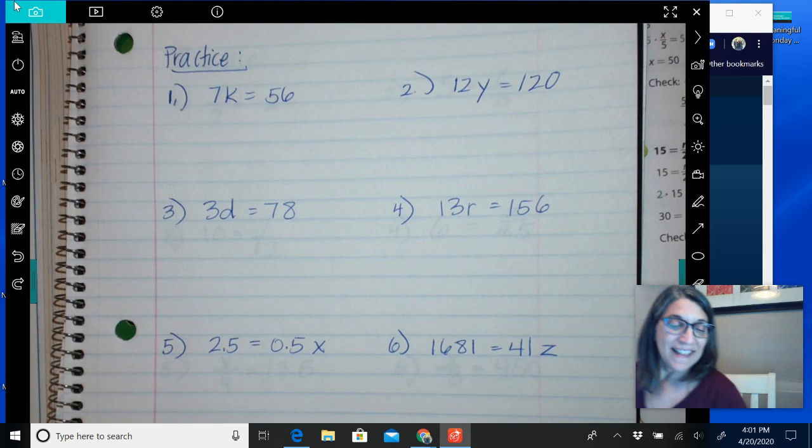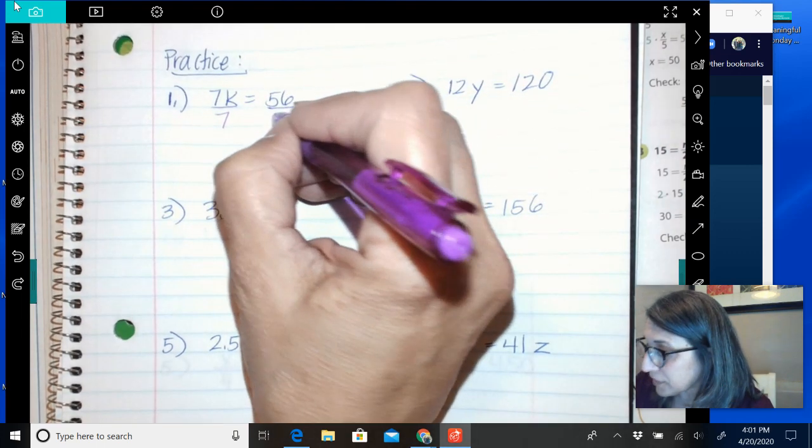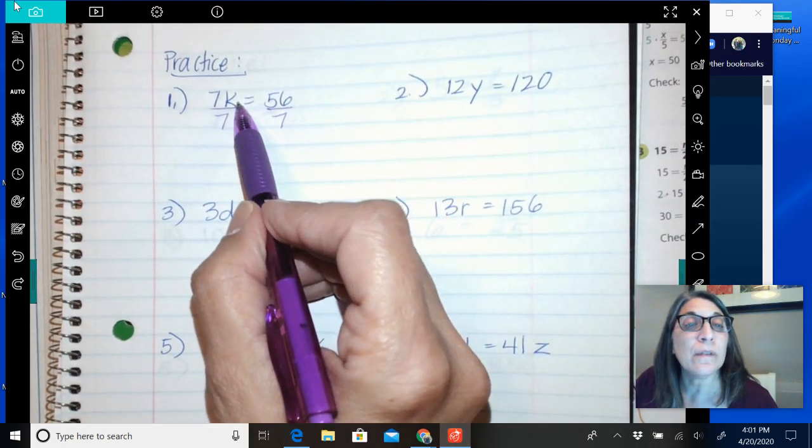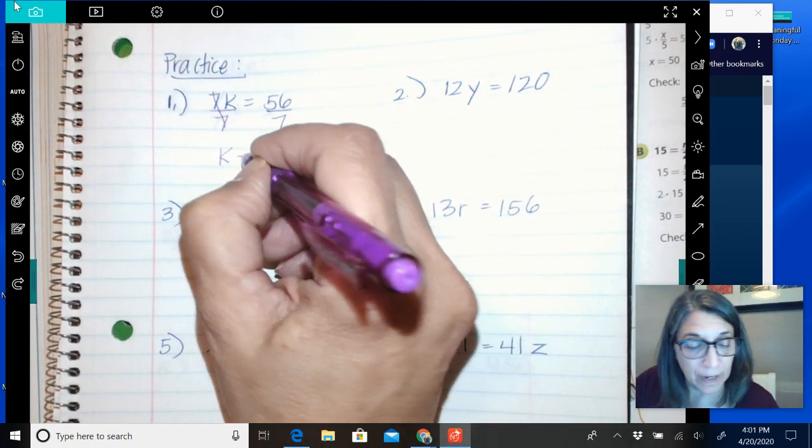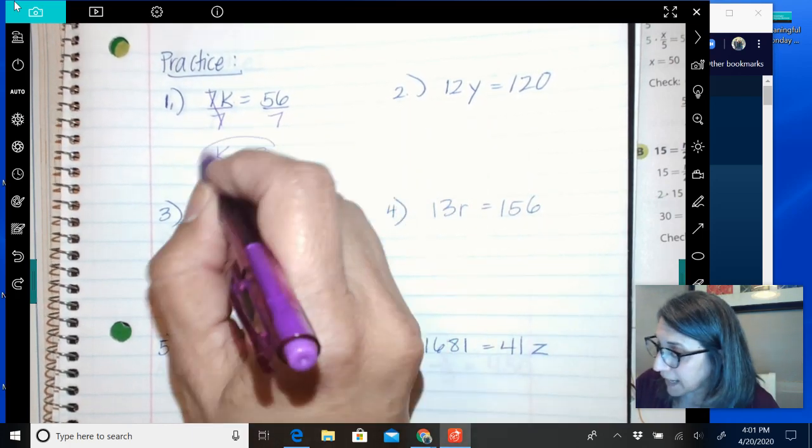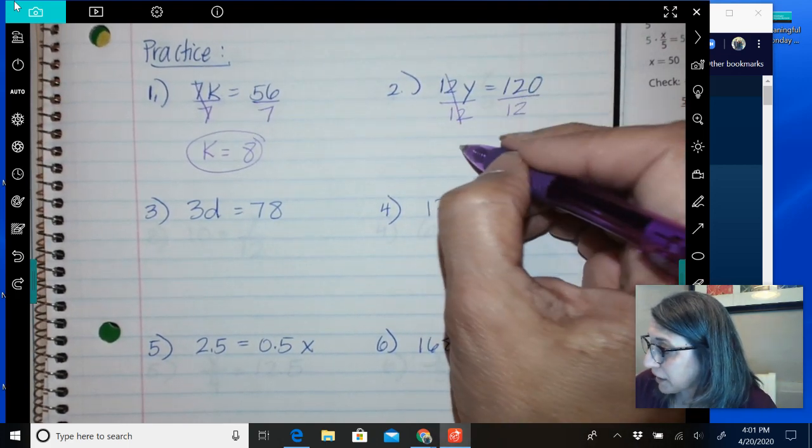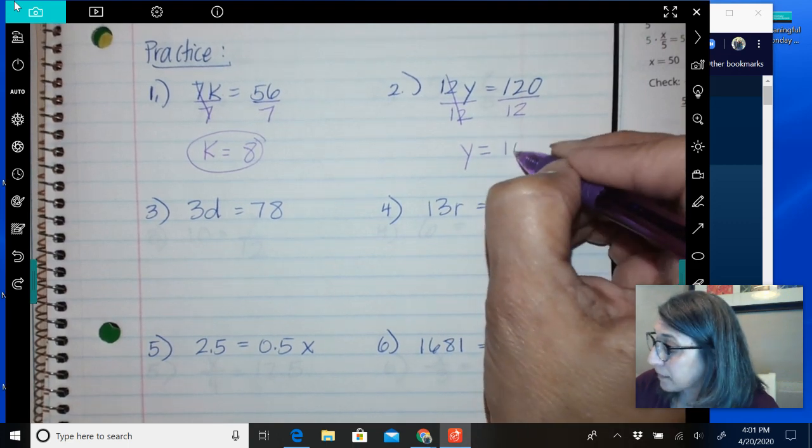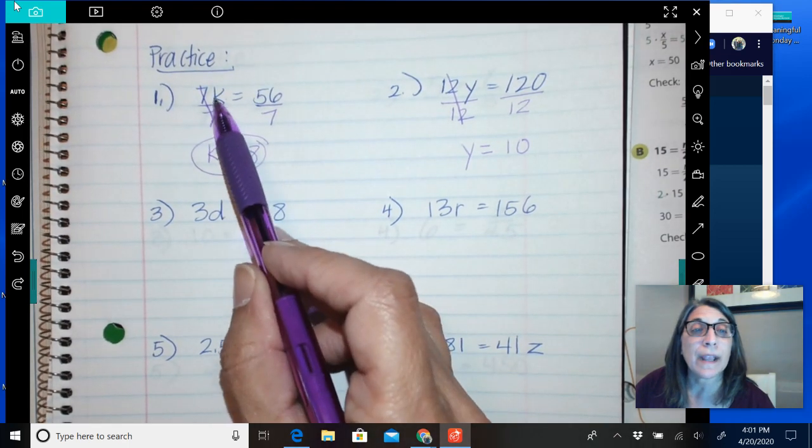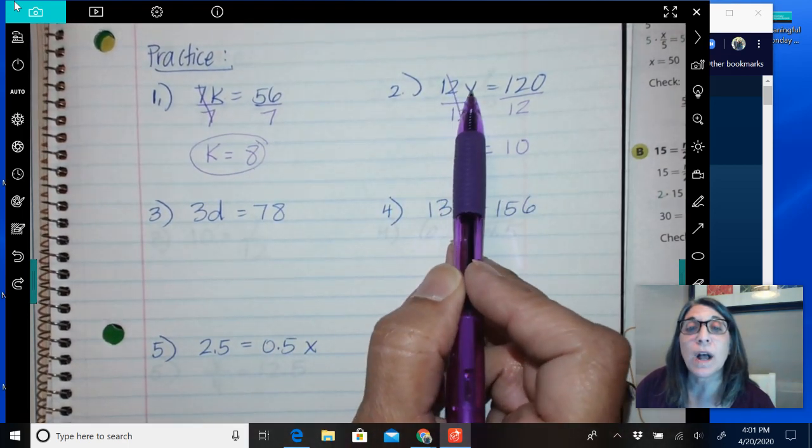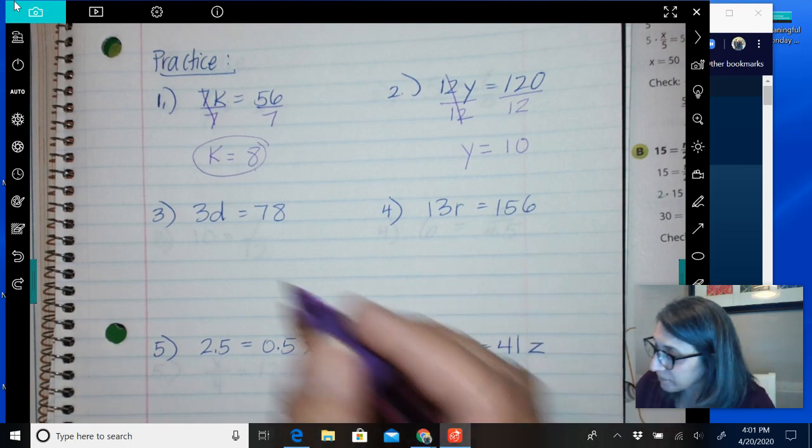Welcome back. All right. So hopefully you solved these by just dividing. All of these are division. You're going to divide. We want to get the k by itself. So in order to do that, if I divide by 7, these become a 1 and that gives me a k over here. And then that gives me an 8 because 56 divided by 7 is 8. I should have already had these solved. Divide by 12. These cancel each other out or become a 1. And technically, this becomes a 10, 120 divided by 10. And then you can check it. You can check it by going, well, I know 8 times 7 is 56. I know 10 times 12 is 120.